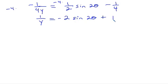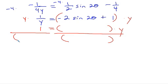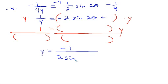To solve for y algebraically, I multiply everything by negative 4, leaving 1 over y equals negative 2 sine of 2-theta plus 1. Then multiplying both sides by y and dividing by the right-hand expression, I get y equals negative 1 over the quantity 2 sine of 2-theta minus 1.